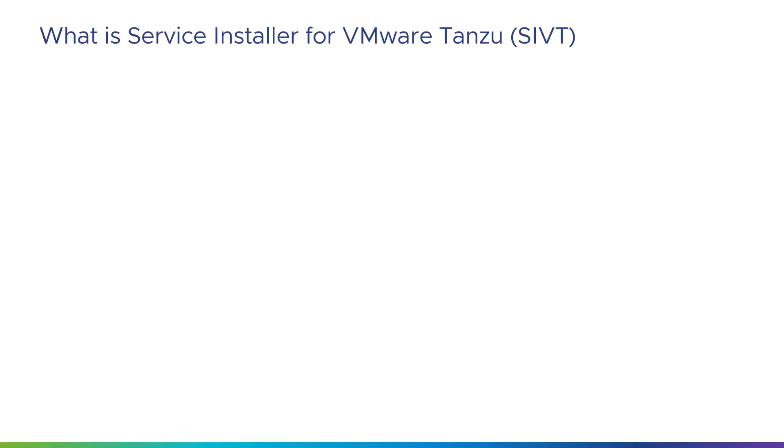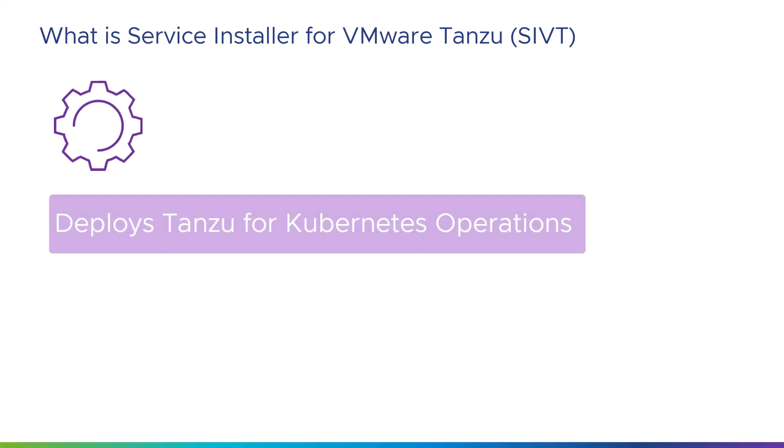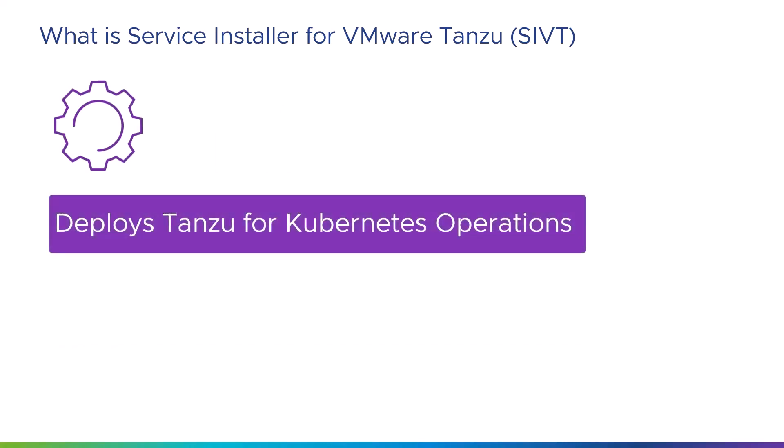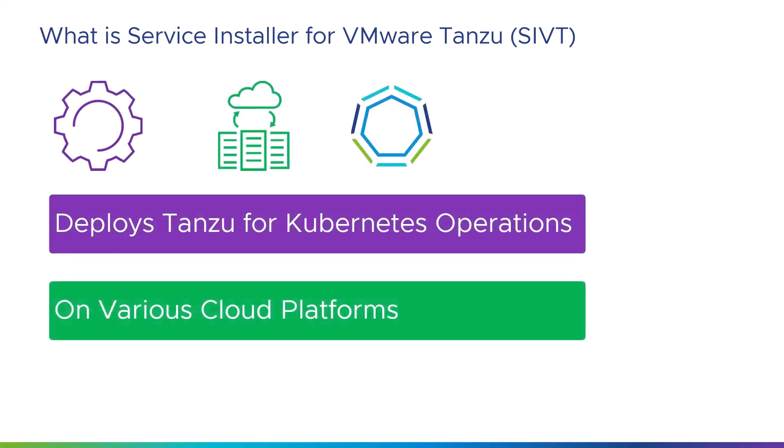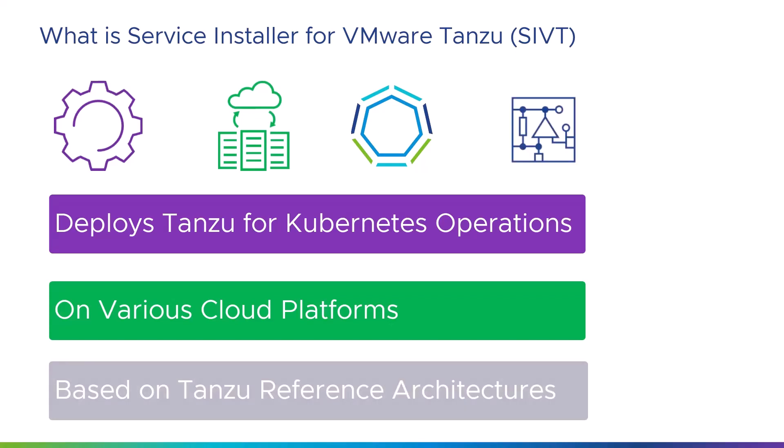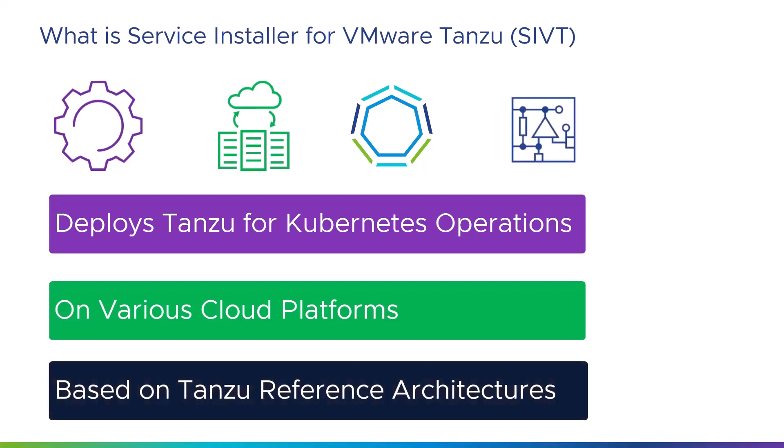Hello. Service Installer for VMware Tanzu, also known as SIVT, automates the deployment of Tanzu for Kubernetes Operations on a variety of platforms such as vSphere, VMware Cloud, AWS, and Azure. SIVT is based on deployment guides for the Tanzu reference architectures.